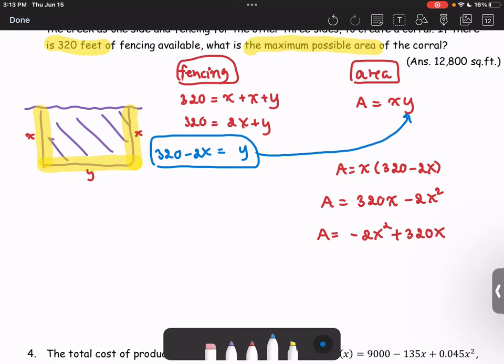As the form of the quadratic function, f(x) equals ax squared plus bx plus c. In this case, the c is missing. That means c is 0. And we make a list: a is negative 2, b is 320, and c is 0. A is less than 0. That tells us we get the parabola opens downward.